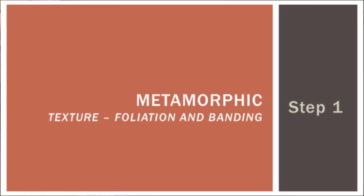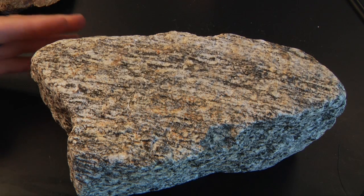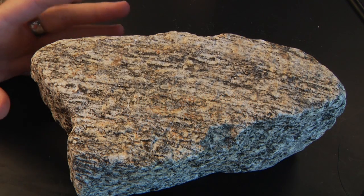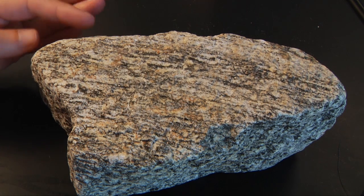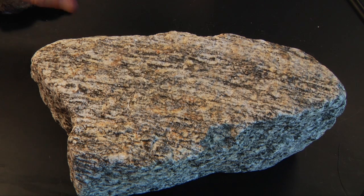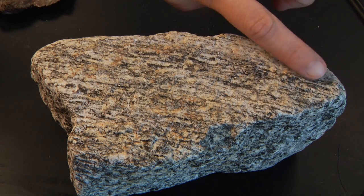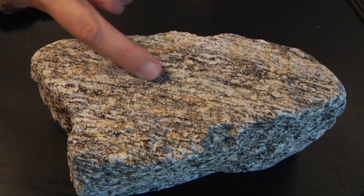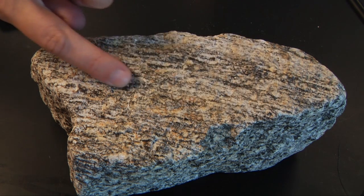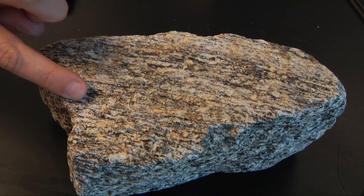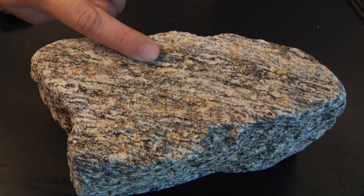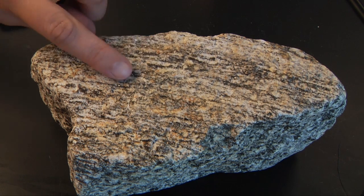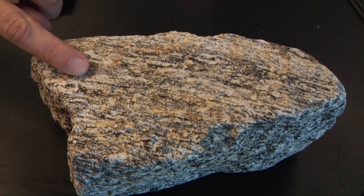When identifying metamorphic rocks, you're going to look for foliation, banding, or no foliation at all. This rock we have here has what's called banding and foliation. Foliation is the alignment of minerals; banding is the separation of those minerals into individual colored layers. Here we can see stripes that run across the sample — the minerals have aligned themselves parallel to one another, and the different color bands, light and dark, look kind of like zebra stripes. Those color bands are the banding.